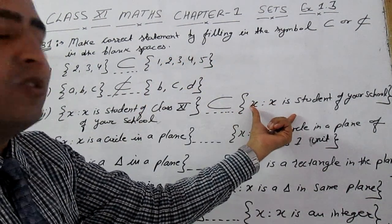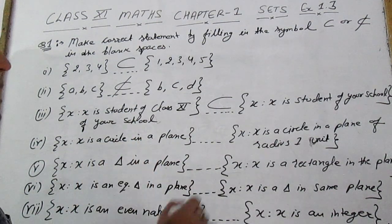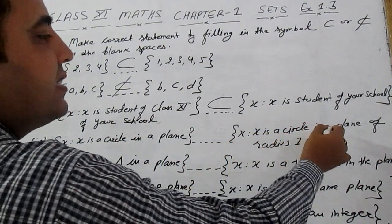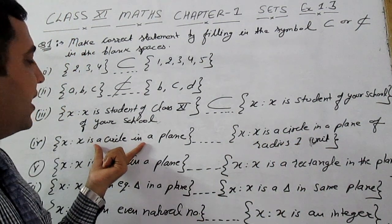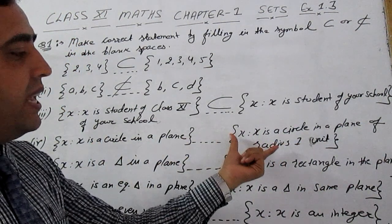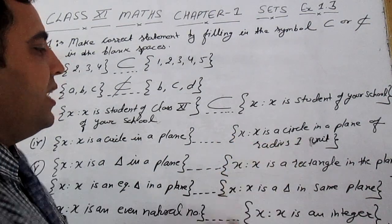For part: x is such that x is a circle in the plane, and x is such that x is a circle in a plane of radius 1 unit. The radius of this circle is not given; it may be greater than the radius of this circle which is given as 1 unit. Therefore clearly it is not a subset.